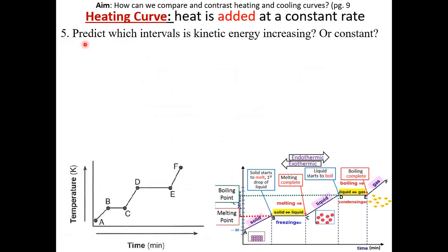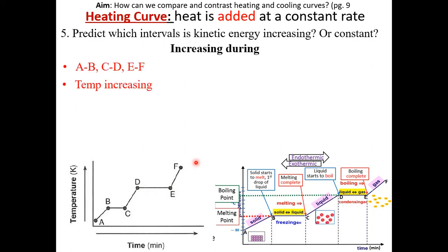Question 5: predict which intervals have kinetic energy increasing or constant. Temperature is related to the average kinetic energy — as kinetic energy increases, temperature will also increase. Looking at the heating curve, the temperature is increasing at intervals AB, CD, and EF. Therefore, kinetic energy will also increase at those intervals. Kinetic energy will be constant when temperature is constant — at intervals BC and DE.